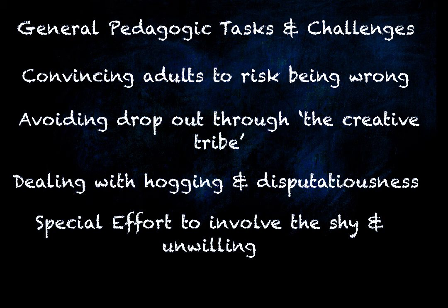Dealing with hogging and disputation: there's a certain character that often turns up in a creative writing class — often a middle-aged man who knows everything and wants to tell everybody, taking up an awful lot of time and space. You've really got to address that straight away. Come in as a teacher and redirect: 'Let her say a bit about it and we'll move on.' Or make it a rule at the start: 'We've all got about a minute each for feedback — no long-windedness.' If someone drops out because of that, honestly, sometimes it's actually good for the class atmosphere.